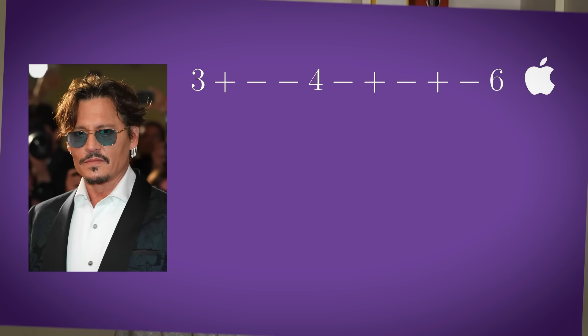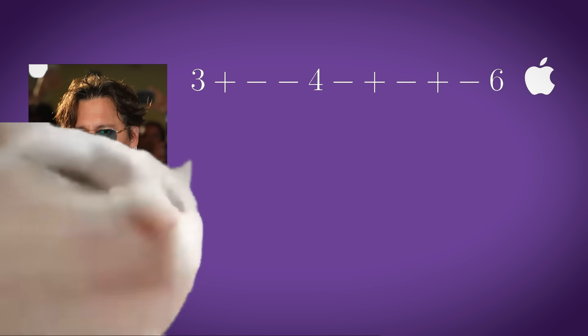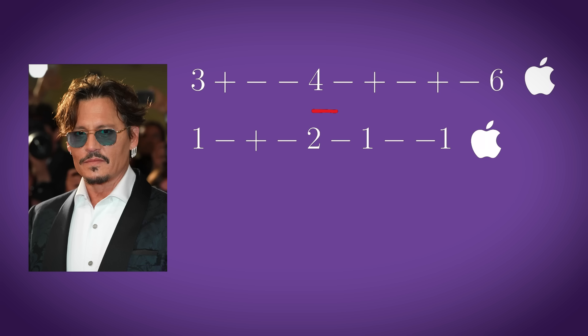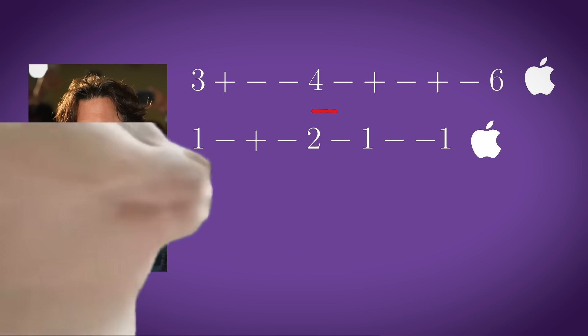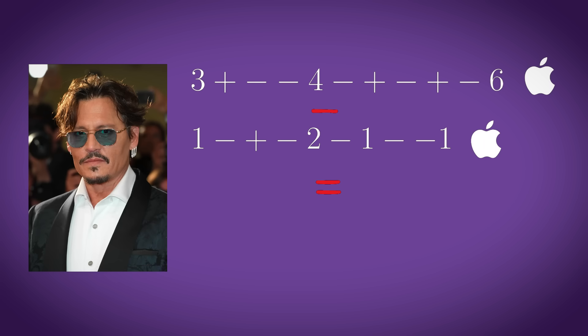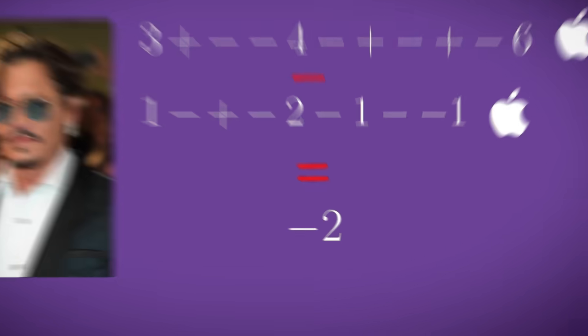Question time: if Johnny has 3 + (- -4) - (+ - + - 6) apples and I take 1 - (+ - 2) - 1 - (- 1) apples from him, how many apples is Johnny left with? The answer is minus 2, and if you didn't get that in time, you must be stupid.